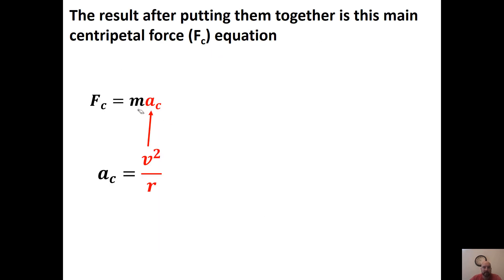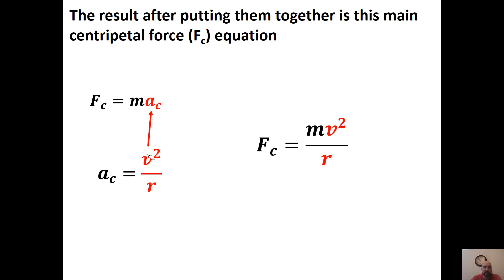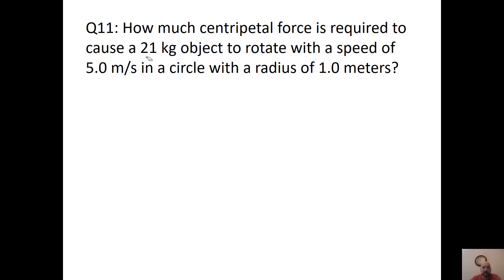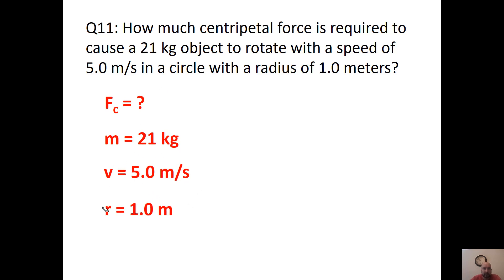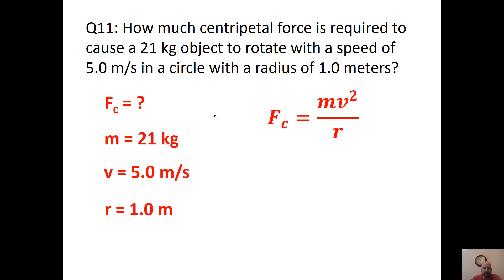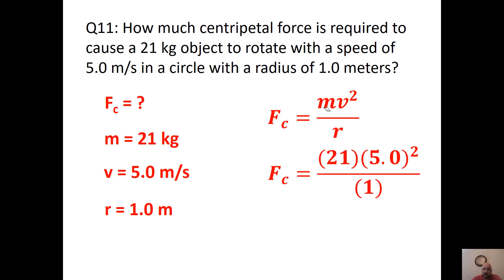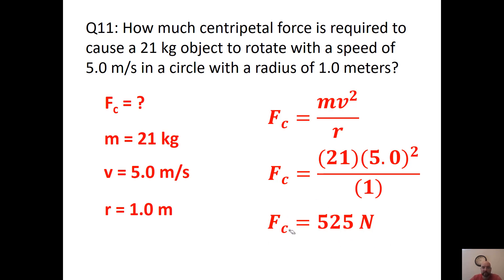Combining those equations gives the main centripetal force equation: FC = mv²/r. This is one of the main equations expected on quizzes and tests. How much centripetal force is required to cause a 21 kg object to rotate at 5 m/s in a circle with a radius of 1 meter? Plug into FC = mv²/r — don't forget velocity is squared — and you get 525 newtons. Inward is always going to be the direction for centripetal force.